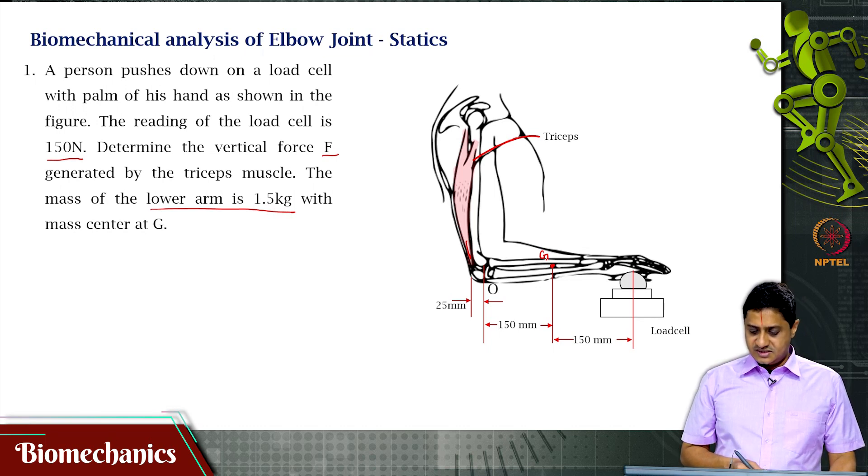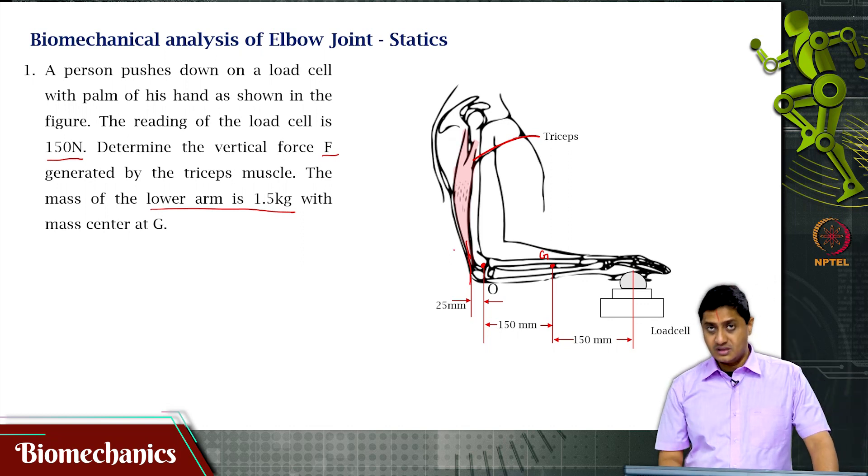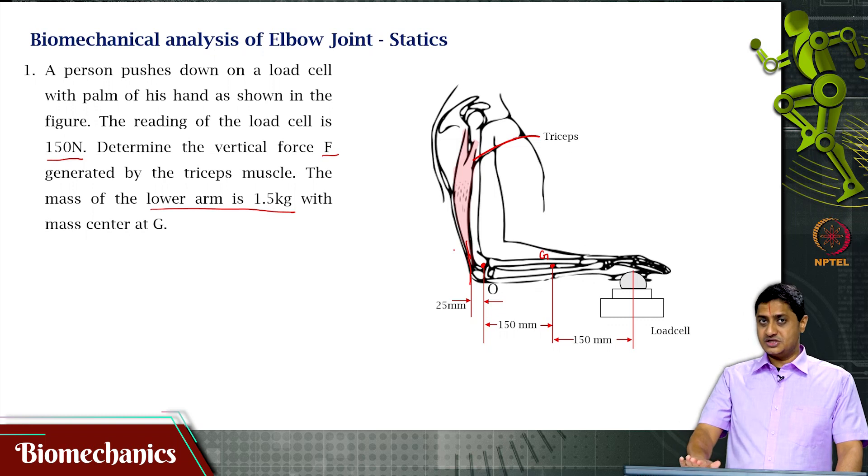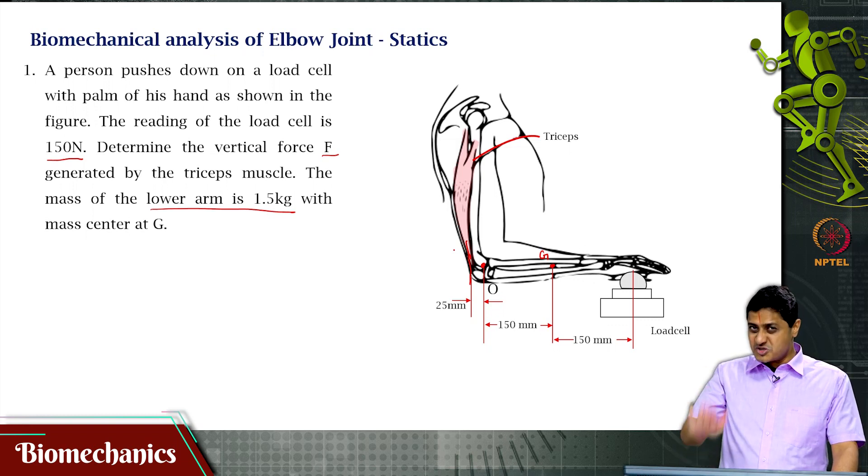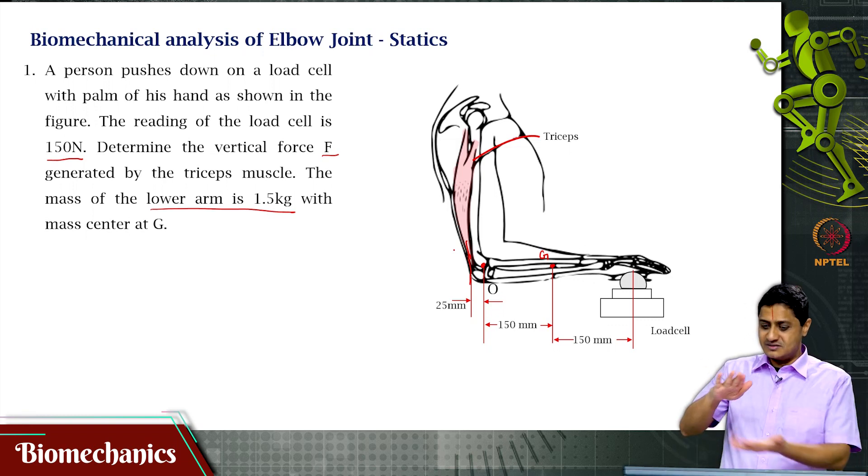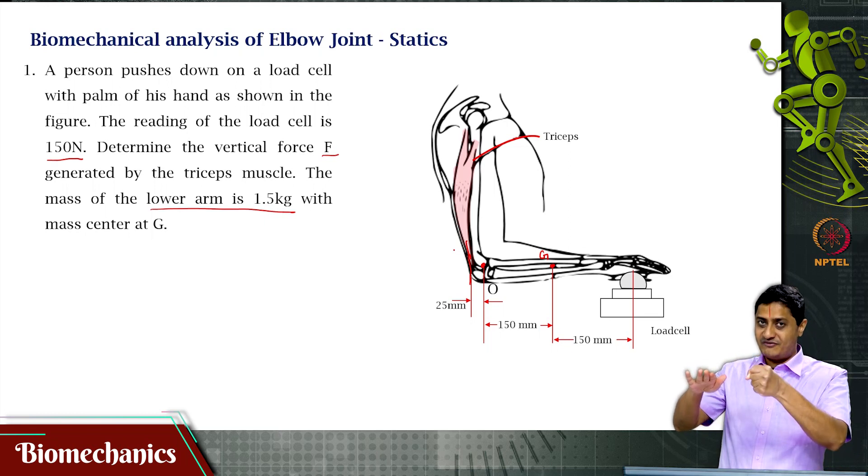Let us study the situation before we start solving the problem. This is the elbow joint. The muscle is attaching to the left of the elbow joint here. This is the triceps muscle. I am not doing flexion, I am doing extension. I am pushing on the load cell.